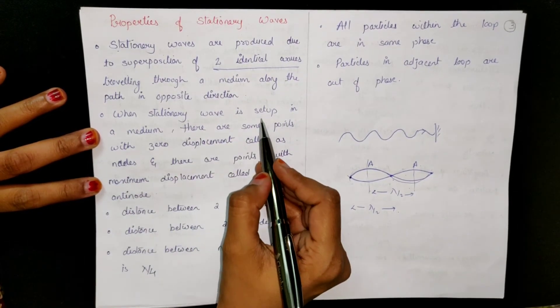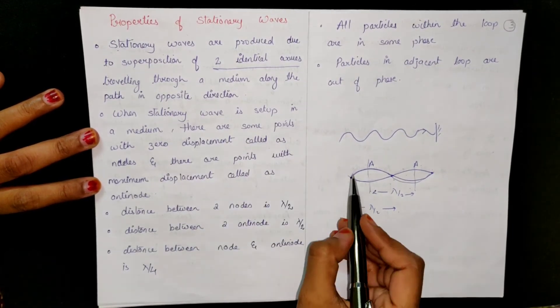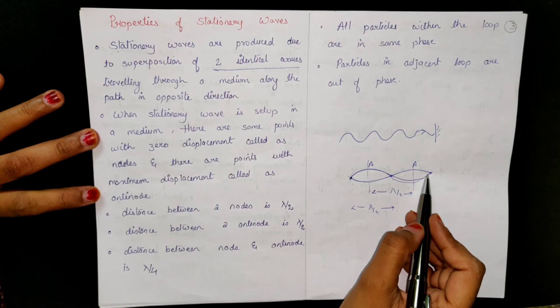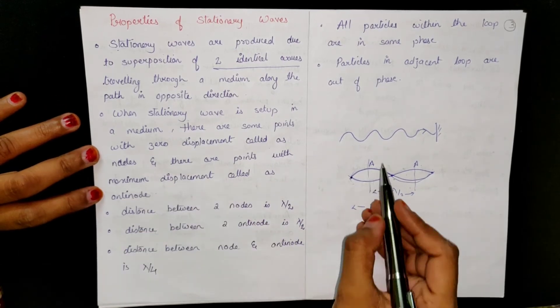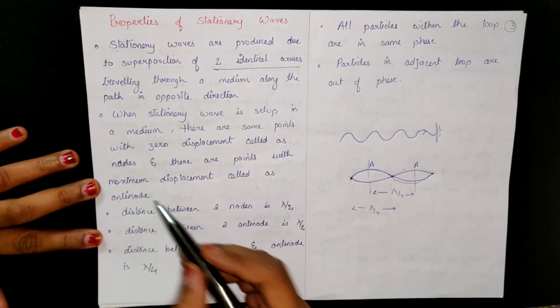When stationary wave is set up in a medium, there are some points with zero displacement. Some points are not displacement, we call nodes, and some points are maximum displacement, we call anti-nodes.